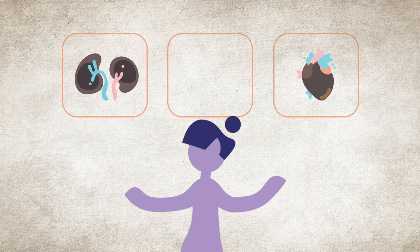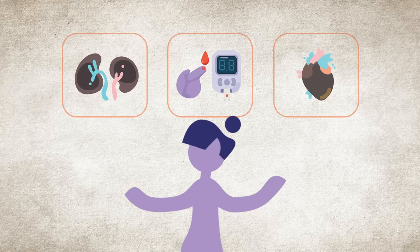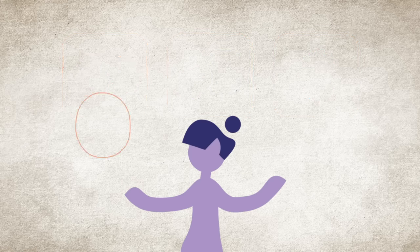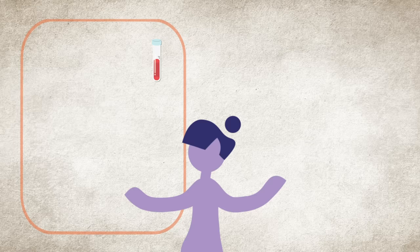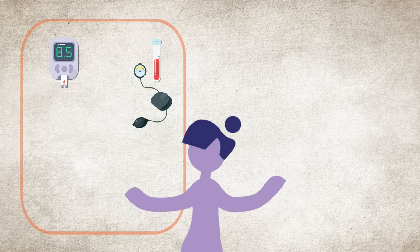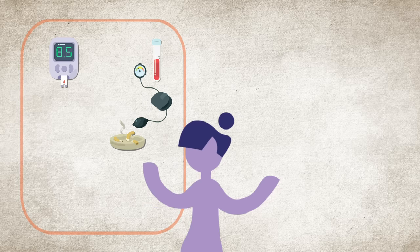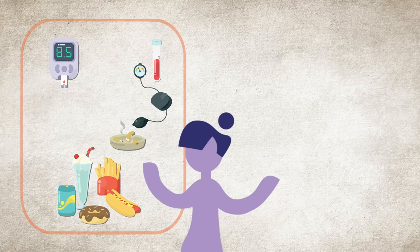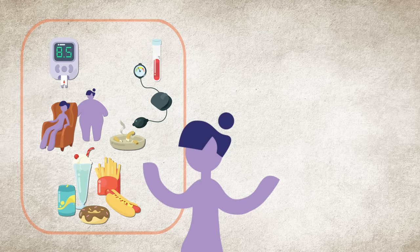Risk factors for kidney disease, heart disease, and diabetes are similar and can include high cholesterol, high blood pressure, high blood sugar, smoking, unhealthy diet, obesity, physical inactivity, and family history.